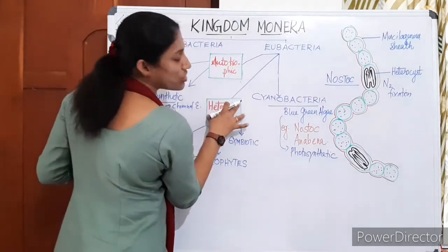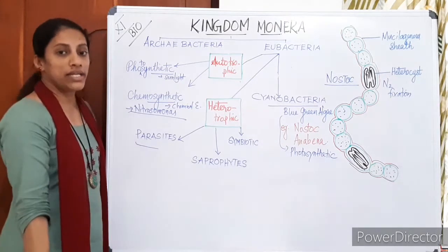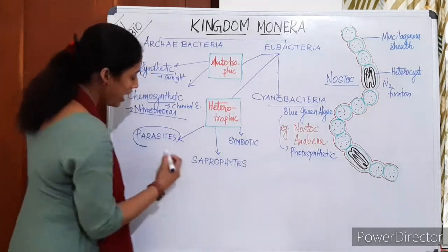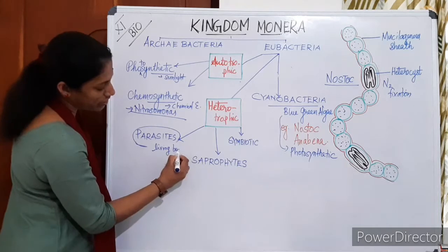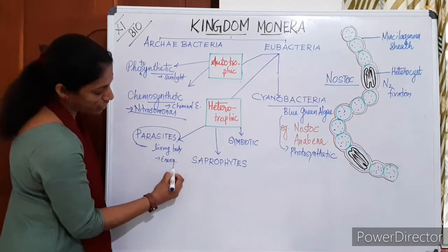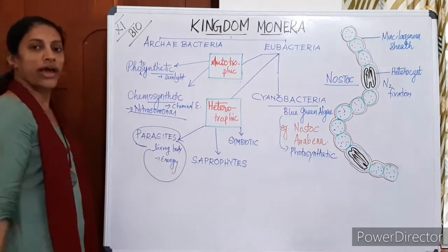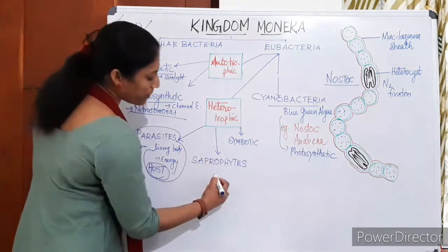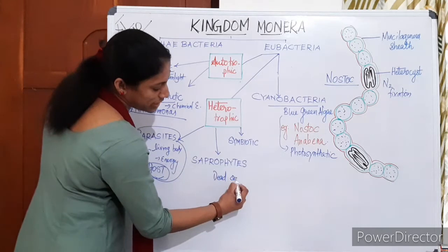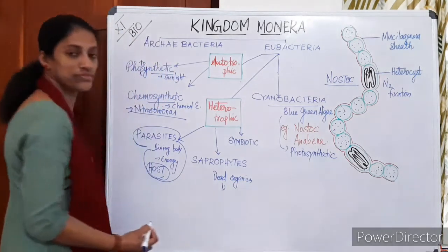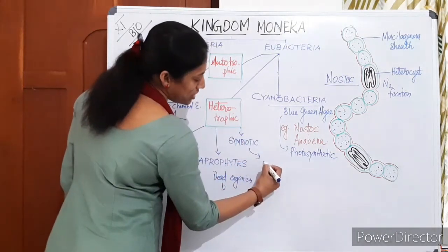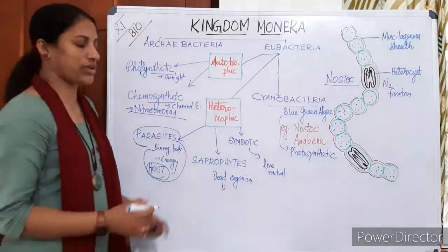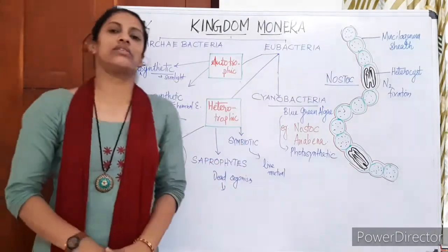The third type is heterotrophic bacteria. They cannot produce their own food and are dependent on others. Parasites are dependent on another living organism — that organism is known as the host. Saprophytes depend on dead organisms for food and energy. Symbionts live mutually benefited with another organism; Rhizobium is an example of a symbiotic bacterium living with higher plants.